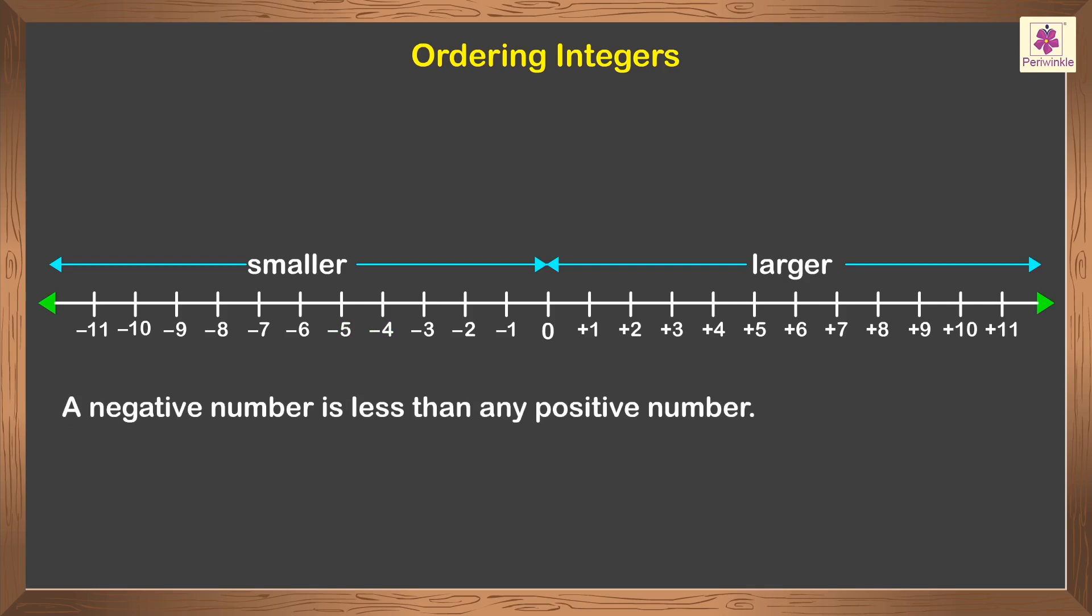A negative number is less than any positive number. For example, 15 is greater than negative 51.